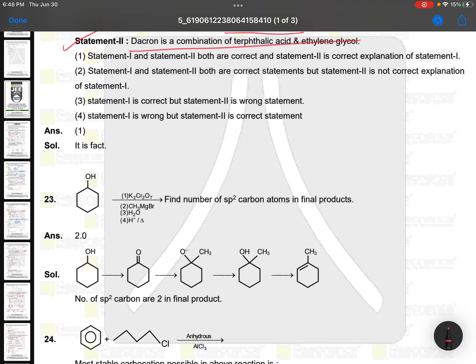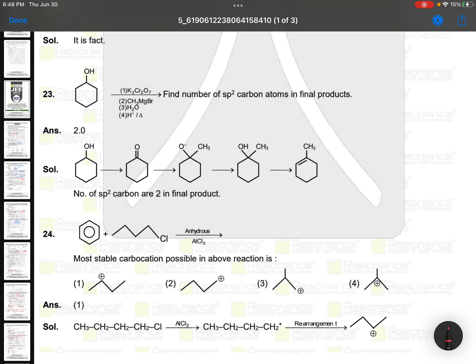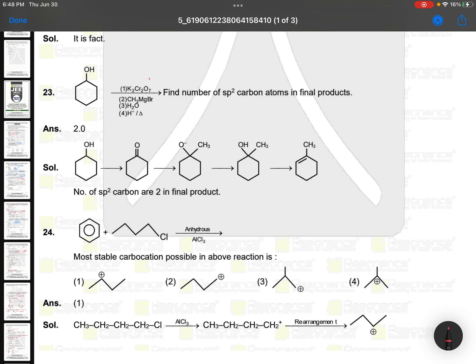K2Cr2O7, first oxidation, so it is converted to ketone. Then CH3MgBr, it is converted to tertiary alcohol. Then H⁺ heating, it is converted into alkene where this is sp² carbon and this is also sp² carbon is asking. Number of sp² carbons in final product. So good question, simple and good question.